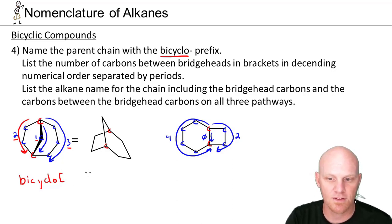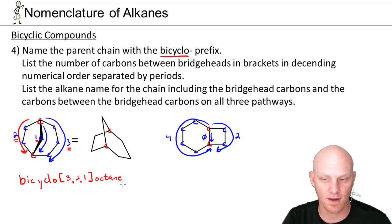But in between bicyclo and octane, you want to leave some brackets there. And in those brackets, you're going to put three numbers separated by periods rather than commas, as we might be accustomed to doing. And what you put in those numbers are the numbers of carbons on the pathway in descending numerical order. So in this case, bicyclo three, two, one octane.